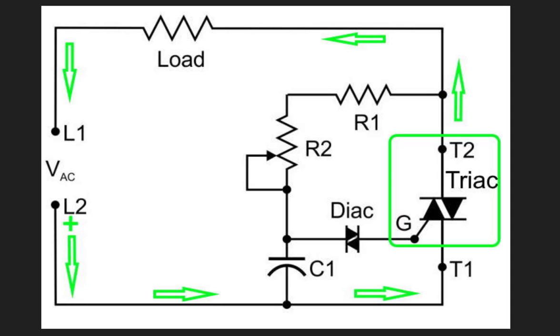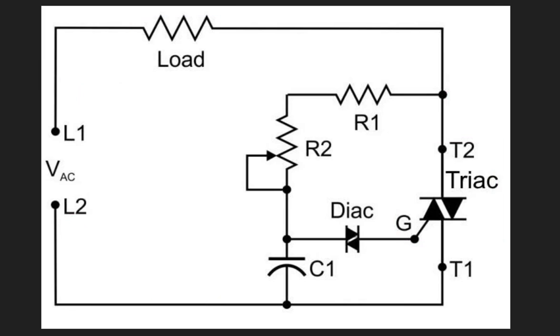And the diac again conducts, providing an appropriate trigger pulse for the triac. By varying the point in the waveform at which the triac is triggered, or the firing angle, the amount of power delivered by the circuit to the load can be varied. This circuit represents a very basic dimmer control.